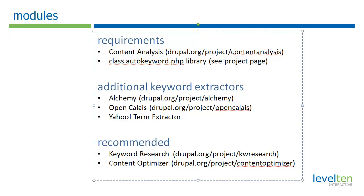A few housekeeping items — there are some requirements for the module. You would need to use the content analysis module, which provides the UI and integrates it into the node edit form, allows it to fetch URLs, and provides that pop-up dialogue box. The other requirement is an open-source script; the algorithm used to extract keywords is found in something called the auto keyword library. It's a free library, and the keyword analysis project page will tell you the URL to download it.